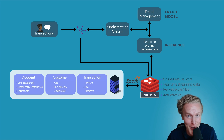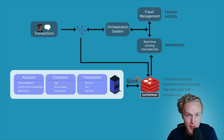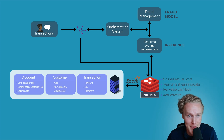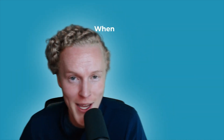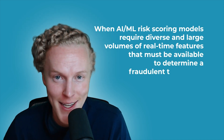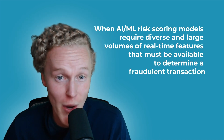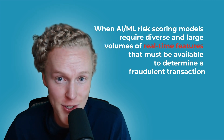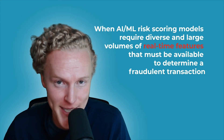The big challenge for banks and other financial businesses with transaction risk scoring is both the latency — how fast the features used in the model get served — and handling the peak throughput from an increasing amount of digital channels and spikes on days like Black Friday, eventually not being able to meet the transaction SLAs. Approving or denying that transaction must not cause friction or delay, else it degrades the customer experience. We use this solution when AI and machine learning risk scoring models require diverse and large volumes of real-time features to determine a fraudulent transaction.